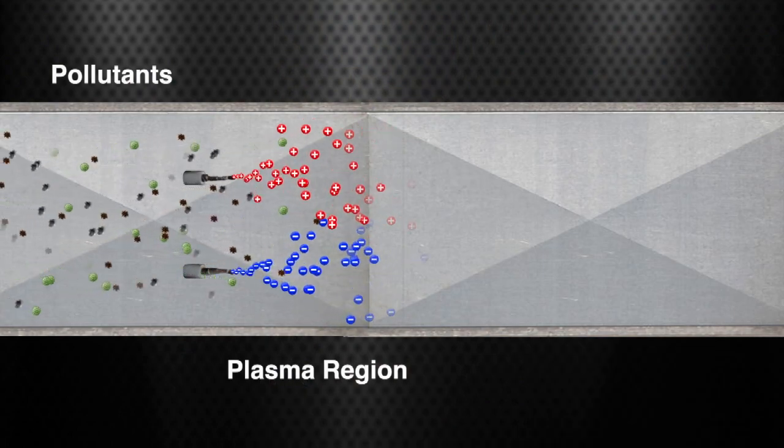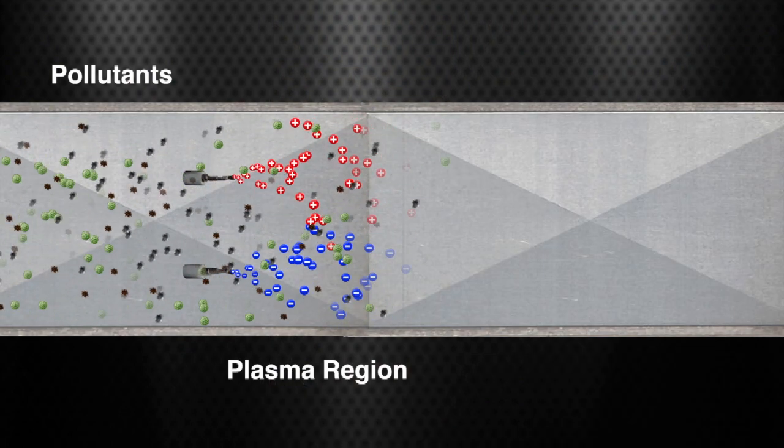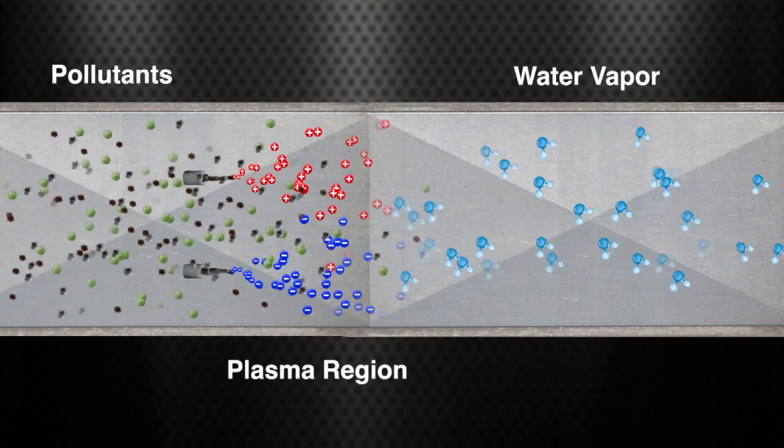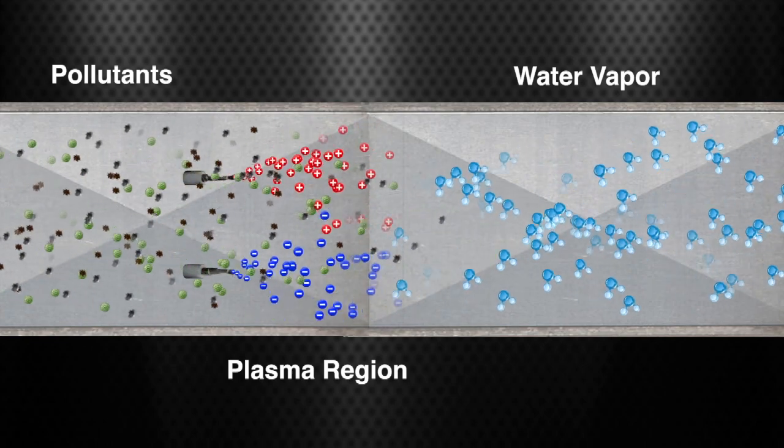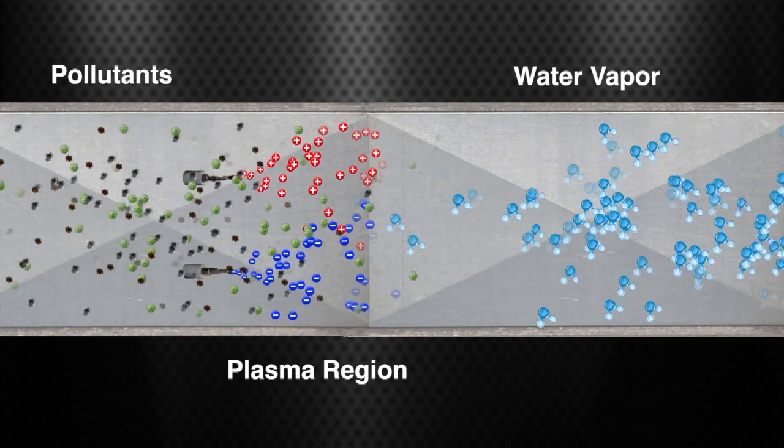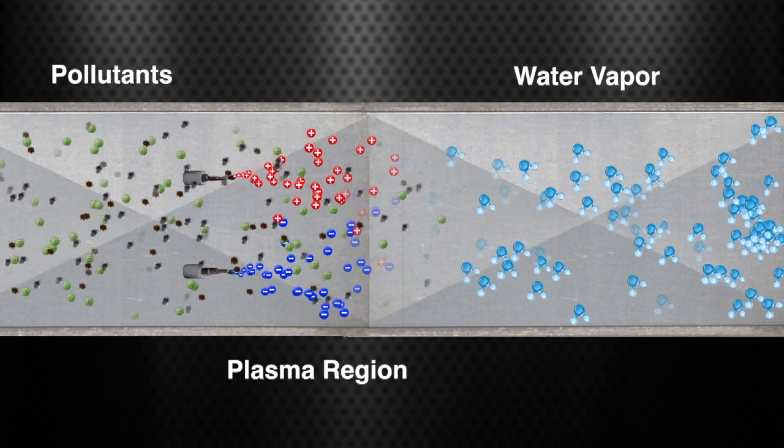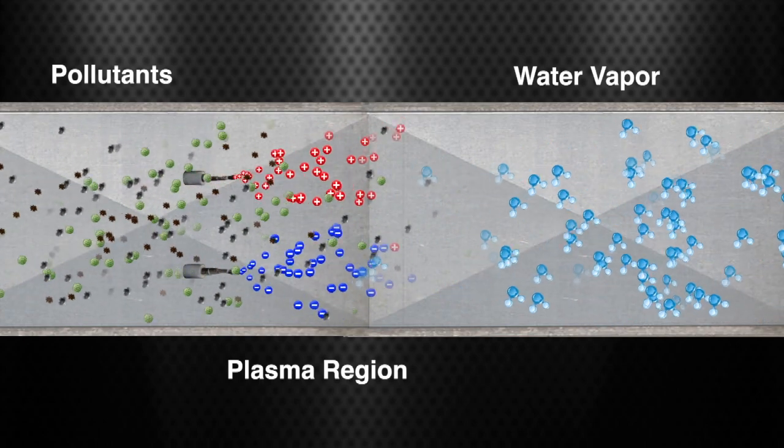When these ions are injected into the air stream, creating a plasma region, they break down passing pollutants and gases into harmless compounds like oxygen, carbon dioxide, and water vapor, neutralizing odors without producing any ozone or other byproducts.